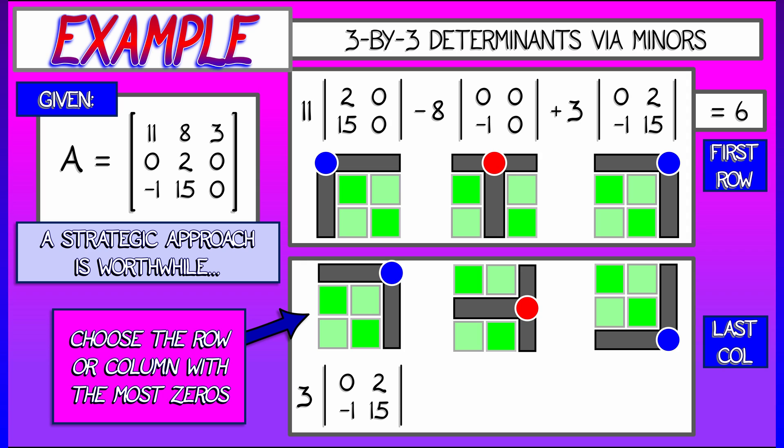The determinant is 3 times the minor determinant, 0, 2, negative 1, 15, minus 0 times something, plus 0 times something. We get the same answer, but it was much easier because of all those zeros.